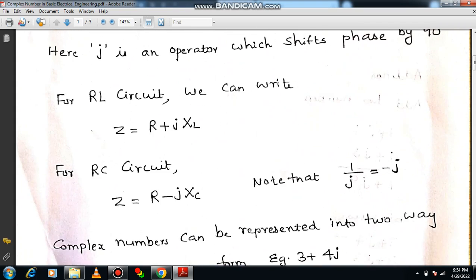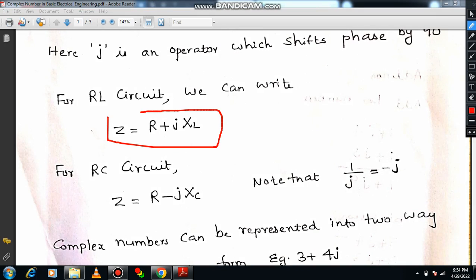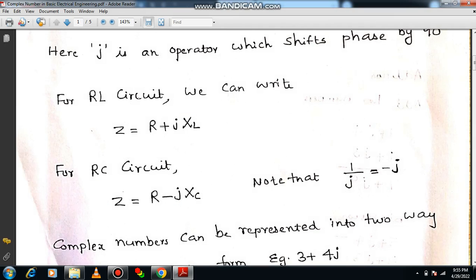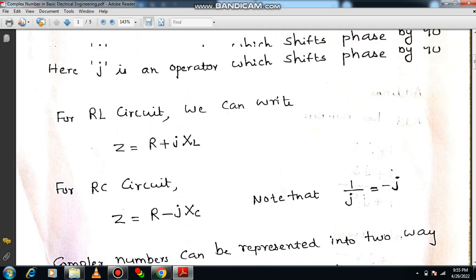Suppose if the circuit is RL circuit, how can you calculate the impedance? Z equals R plus J into XL. If it is an RC network, then we can write Z equals R minus J XC. Now you may ask me one question: why is it negative here? Remember always, 1 by J is nothing but minus J.